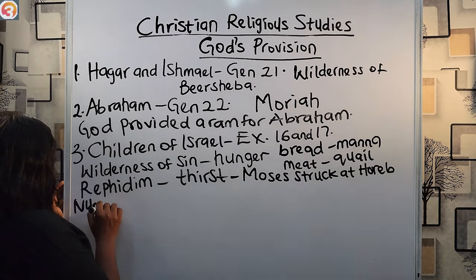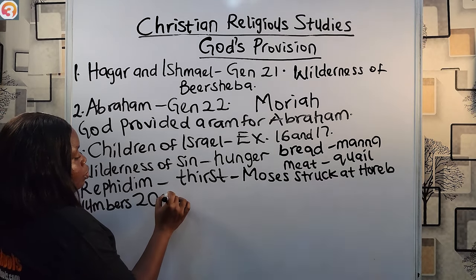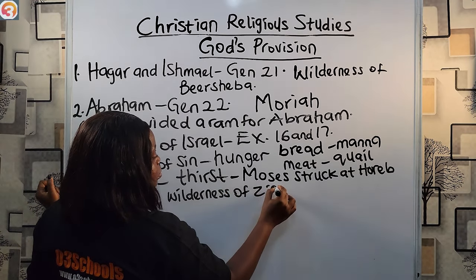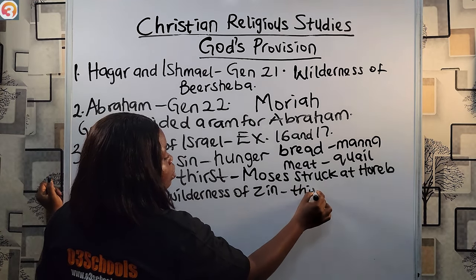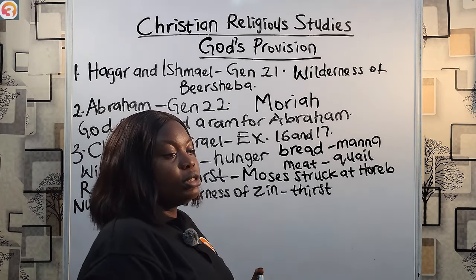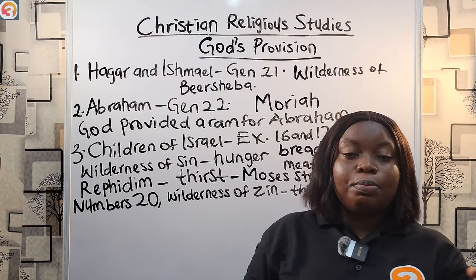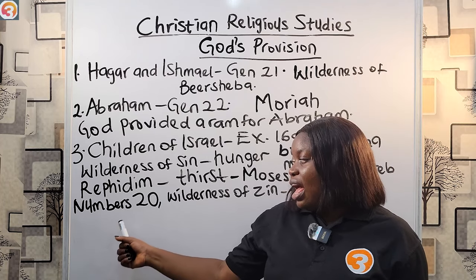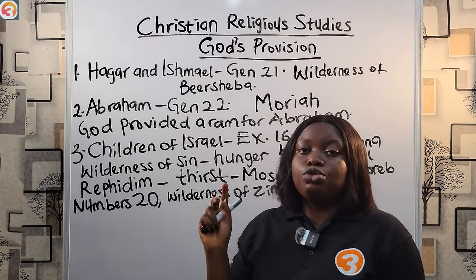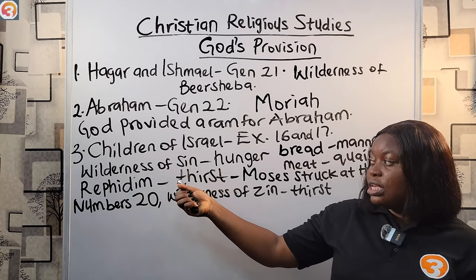Then in Numbers chapter 20, the children of Israel came to the wilderness of Zin, and there was also no water for them to drink. They complained again to Moses, and Moses cried to God. This time God told him to speak to the rock in the presence of the Israelites. But out of anger, Moses struck the rock twice and water gushed out. So God also provided water for the children of Israel in the wilderness of Zin.